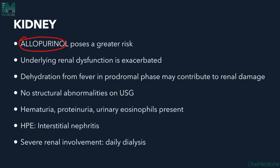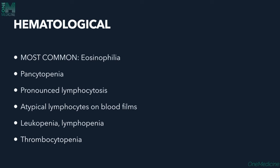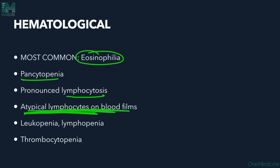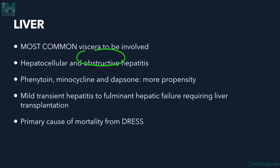Renal involvement is significant, especially with allopurinol — pre-existing renal dysfunction is exacerbated. Dehydration from fever may contribute to renal damage. Findings include hematuria, proteinuria, urinary eosinophils, and interstitial nephritis on histopathology. Severe renal involvement may require dialysis. Hematologically, eosinophilia is most common; pancytopenia, pronounced lymphocytosis with atypical lymphocytes, leukopenia, and thrombocytopenia may also occur.